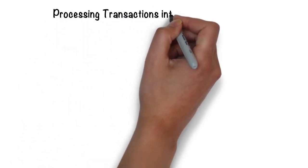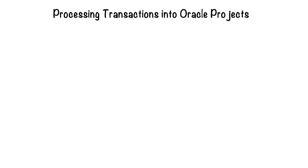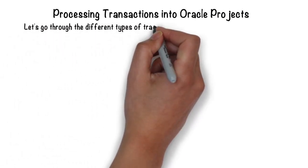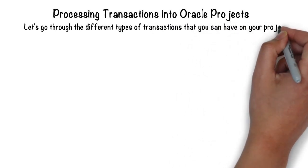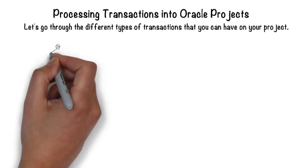Now that your project has been approved, it's active, it's ready for action. Let's talk about the different types of transactions that can be posted as activity on your project. There are several different types of activity that could happen on your project, and let's go through what those are.